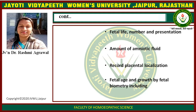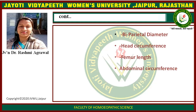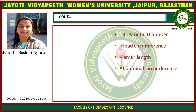In the second and third trimesters, fetal age and growth are assessed by fetal biometry, including biparietal diameter, head circumference, femur length, and abdominal circumference. These measurements help determine the prognosis and whether the delivery will be vaginal or cesarean.